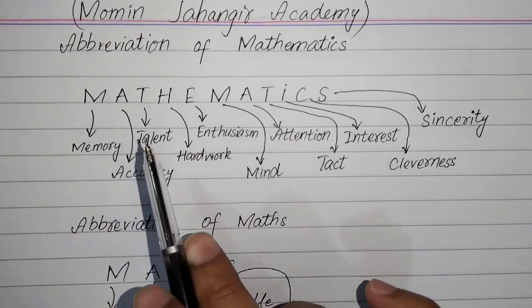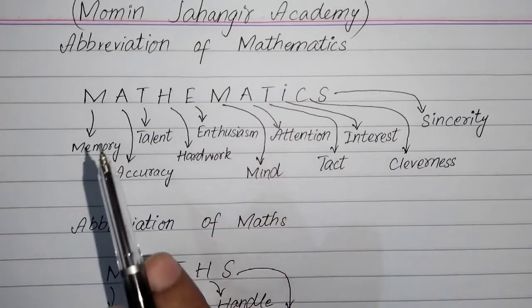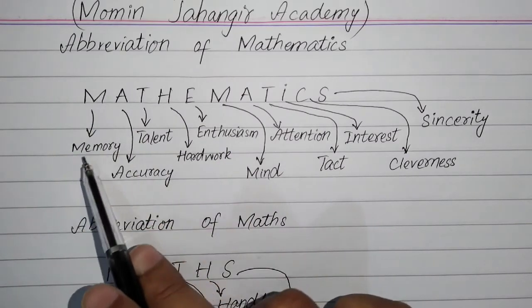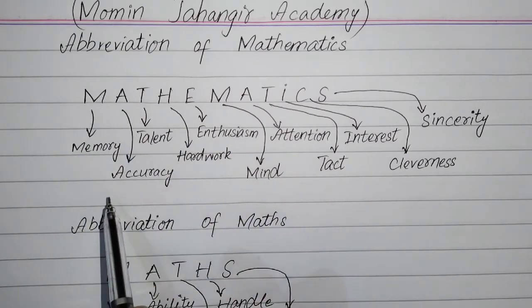Firstly, the abbreviation of mathematics. In mathematics, M stands for memory, A stands for accuracy.